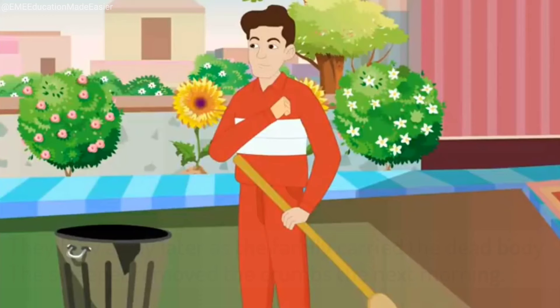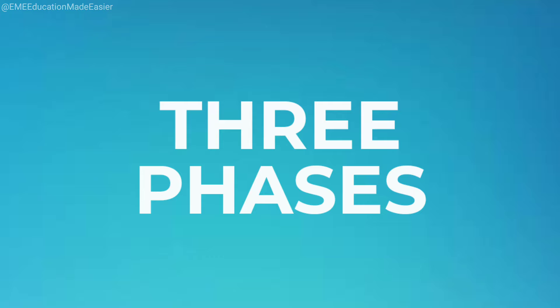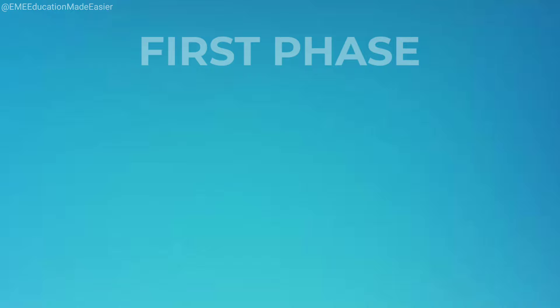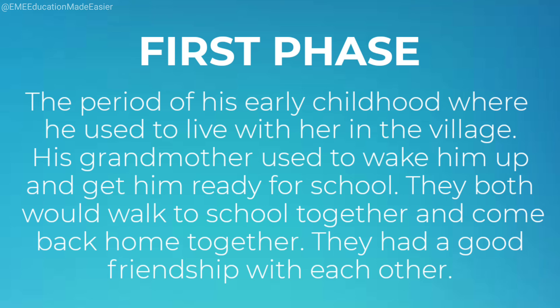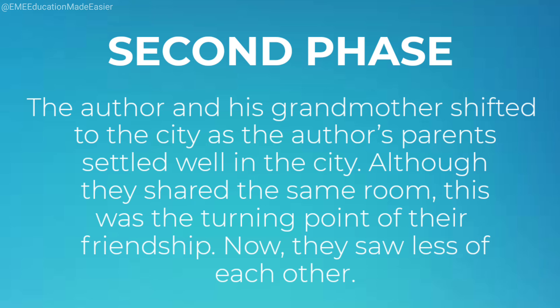The birds were so sensitive — they did not want to eat bread, but were mourning the death of the one who had fed them for so many days. In this chapter, three phases of the author's relationship with his grandmother are explained. The first phase was his early childhood when he lived with her in the village — she would wake him up, get him ready, and they would go to school and come back home together. Then the second phase, the turning point, when they shifted to the city, where although they shared the same room, they saw less of each other.